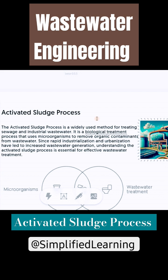In the Activated Sludge Process, activated sludge — that is, sludge enriched with microorganisms — is used to break down the organic matter present in the wastewater. Microorganisms are put to use to treat the wastewater. ASP is a widely used method for treating sewage and industrial wastewater, using microorganisms to remove organic contaminants.